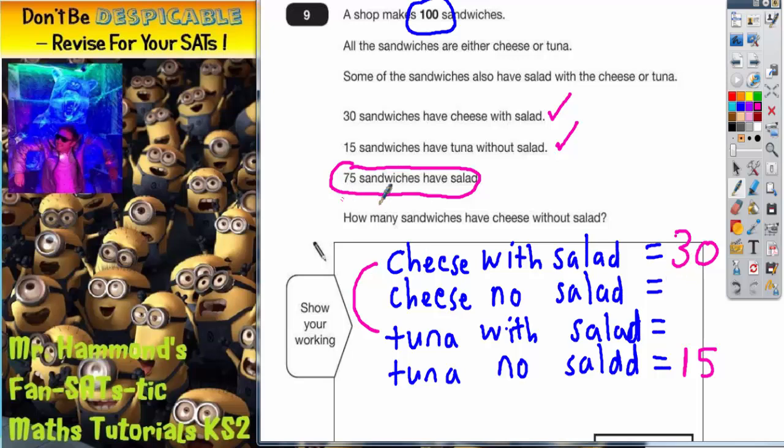But we're told that we need 75 altogether. So what is the difference between 75 and 30? Well, if you take 30 off 75, 5 take away 0 is 5, 7 take away 3 is 4.